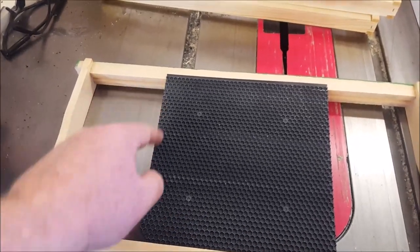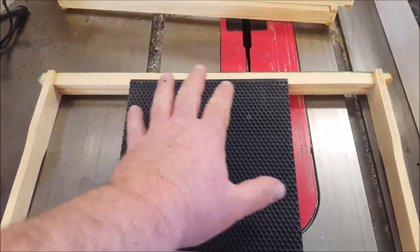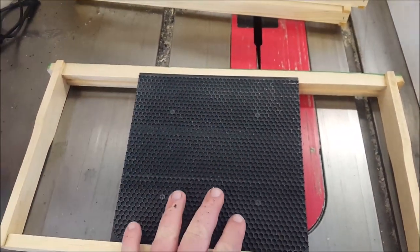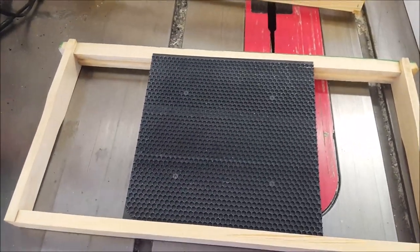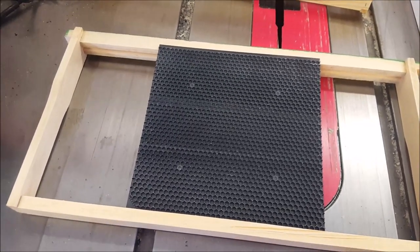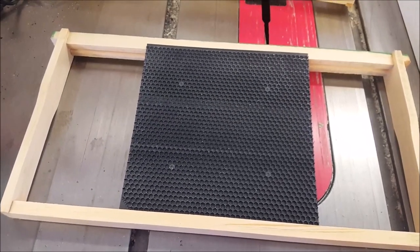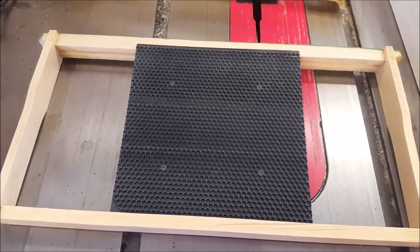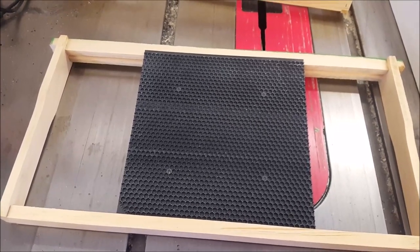But even if I do, if I cut the comb honey out of this part, then I run this through the uncapper. I uncap that and then that'll run through the extractor. That'll all be drawn then for next year and then they can continue to draw that out and make more comb honey. Or not. Or just a foundationless piece. So that's the idea behind these.